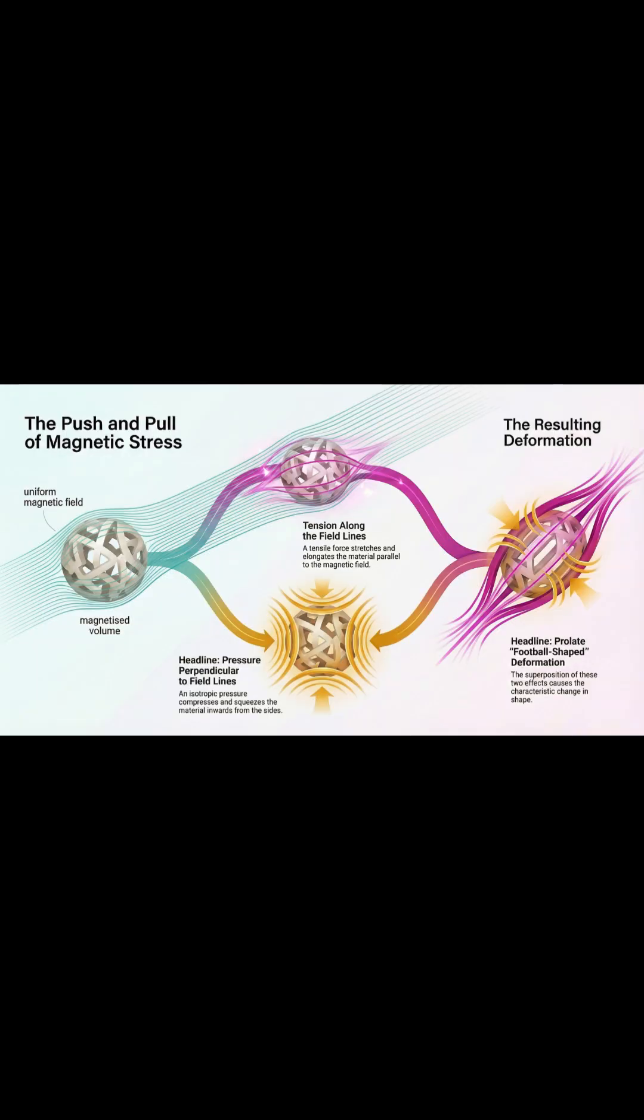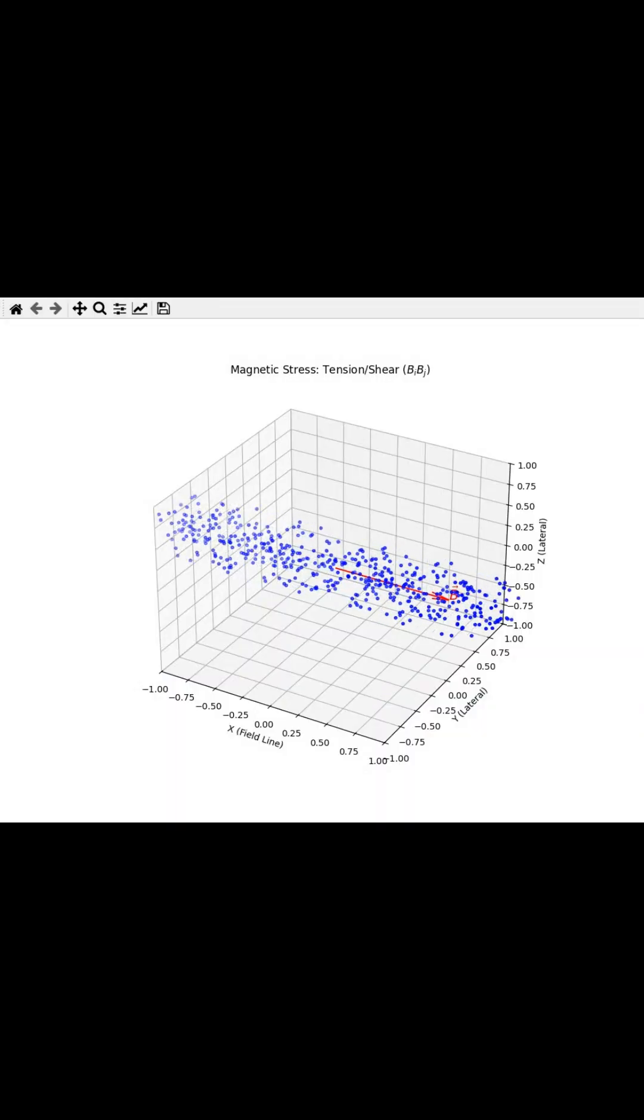The Maxwell Stress Tensor gives us the math to find the force, and its two components explain the tension and compression that physically reshape the volume.